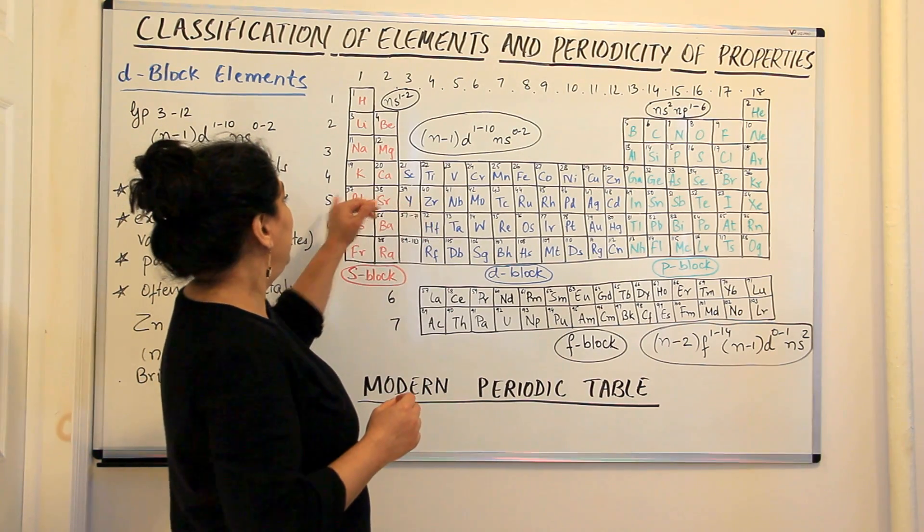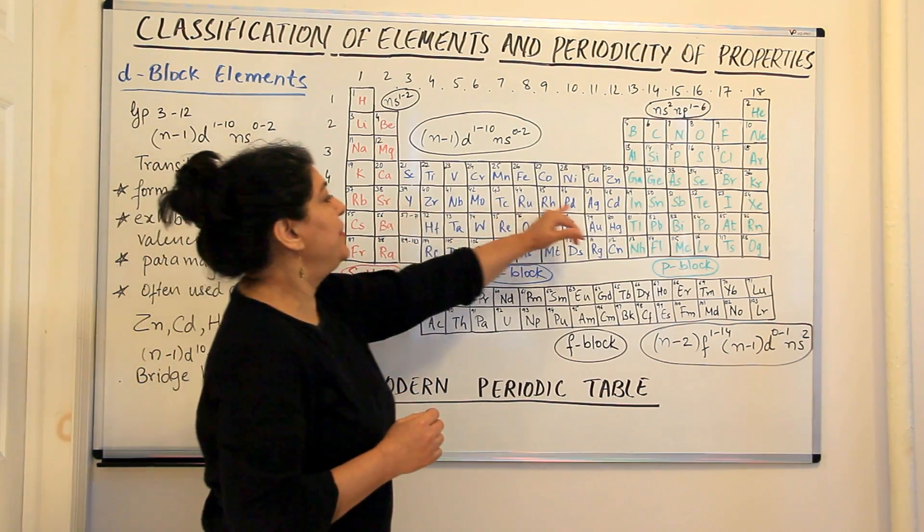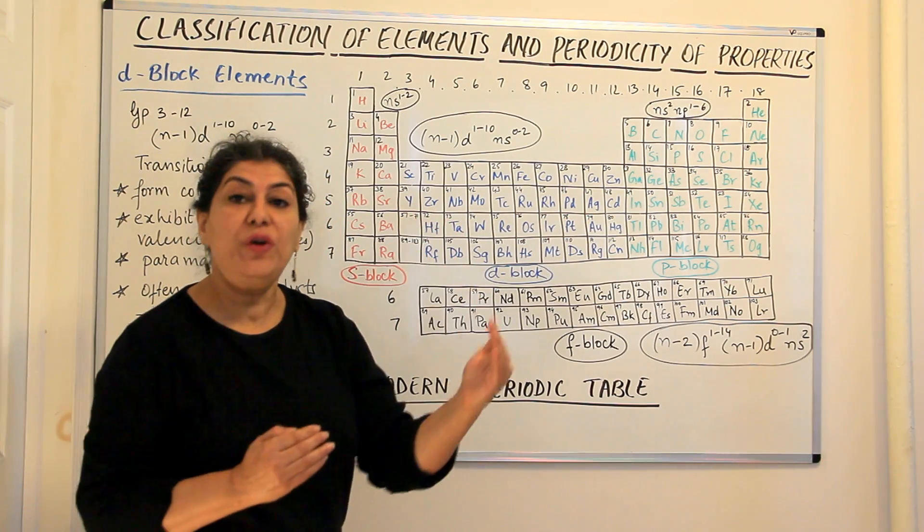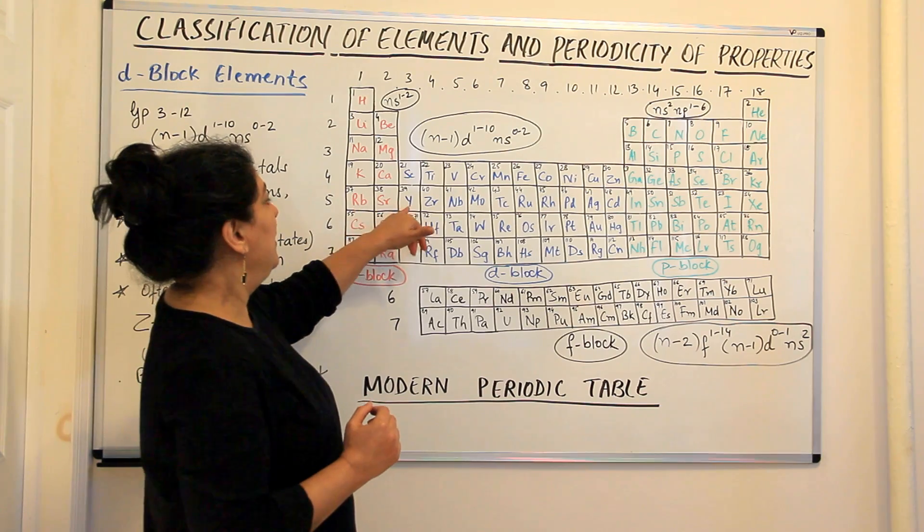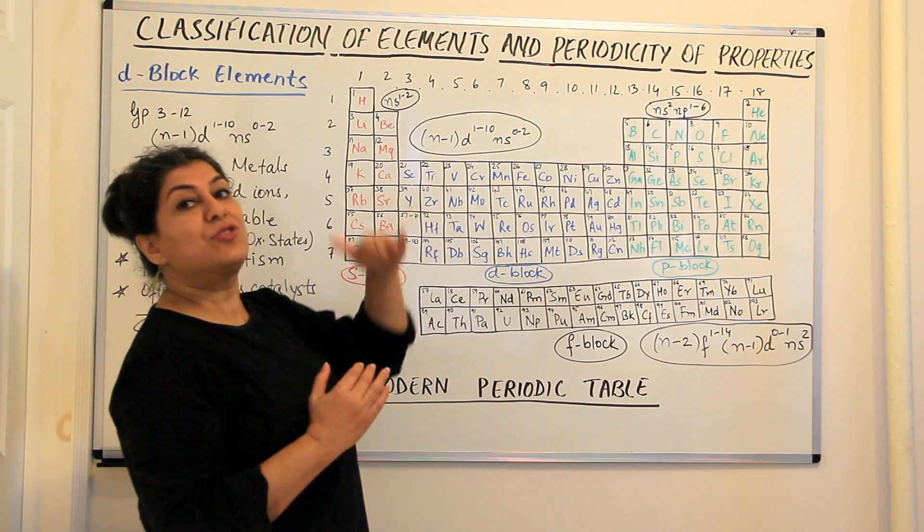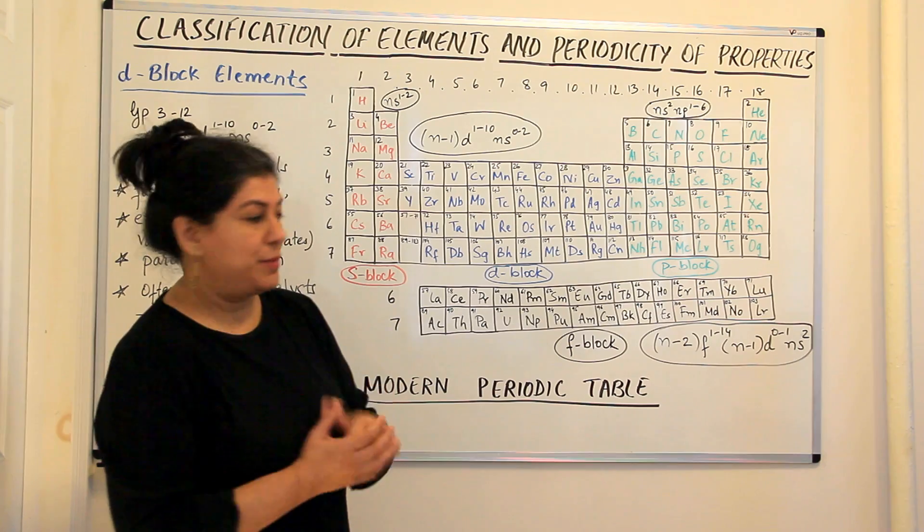the first transition series consists of elements in which the 3D orbitals are being filled up. The next one, that is in the fifth period, the transition series has elements in which the 4D orbitals are being filled up. That is, it is not the fifth shell but the fourth shell, D orbitals of the fourth shell which is the penultimate shell.